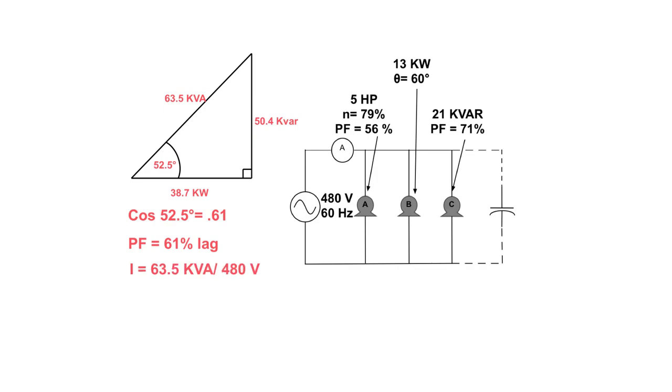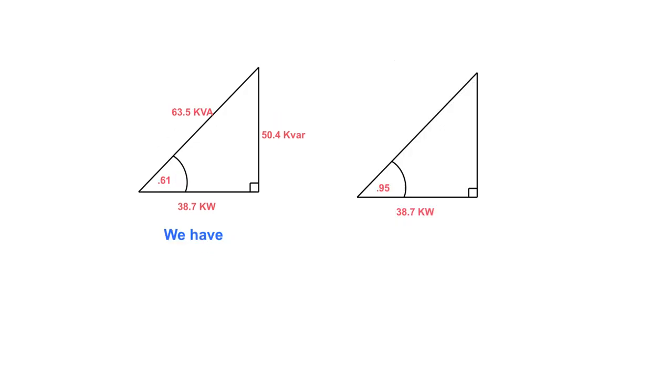We can take our total kVA, because it's our kVA that determines line current, and we take 63.5 kVA, or 63,500 VA, and divide that by 480 to get our overall line current. In this case, that works out to be 132 amps. So that is the triangle that we have. We calculated out all these values. We calculated out that we had a 61% power factor. This is the triangle we have. Now what we need to do is calculate out the triangle that we want.